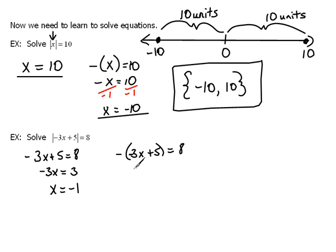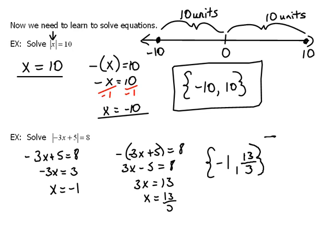Over here, we have to distribute out our negative first. So, we would have 3x minus 5 equals 8. Adding 5 to both sides, we get 3x equals 13. And then dividing both sides by 3, we would get 13 thirds. So, our answer would be negative 1, comma, 13 over 3.